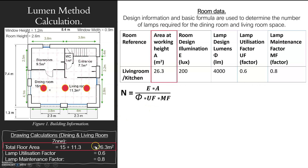Starting off with the working area A — this A value is your floor area, the area at working height. It needs to be whatever surface height you're working at, so essentially the whole floor area of the room.